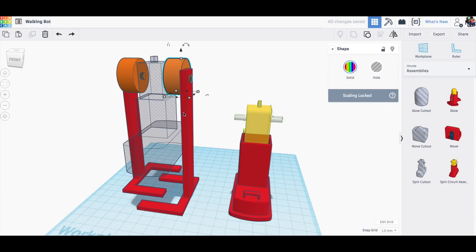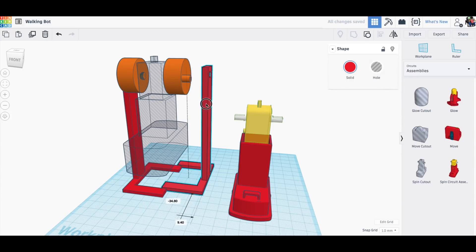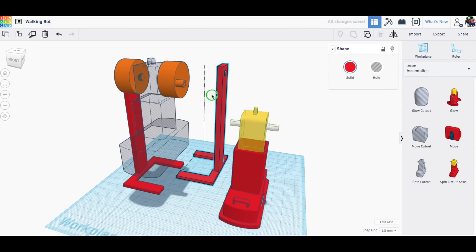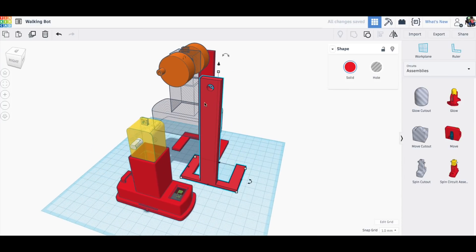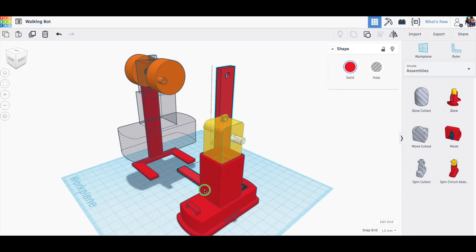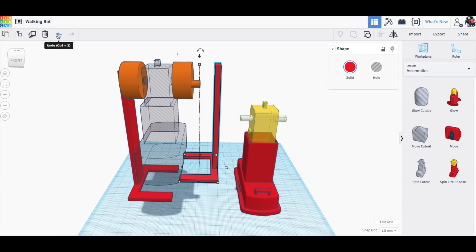Then I made the leg. The leg is just a bunch of blocks put together with feet and then a hole to go over that post on the cam. So as this thing spins it should lift the leg and then place it back down just like you're walking.